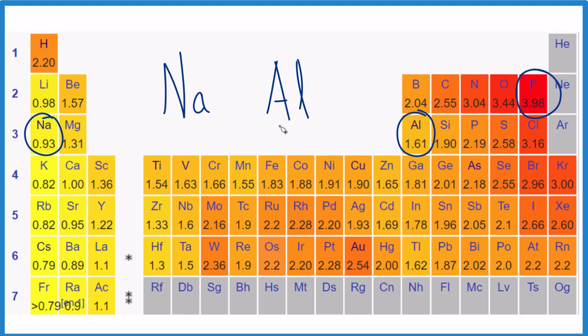So the trend for electronegativity, as you go across periods here, it increases. As you go up groups, it also increases, and fluorine here, that's the most electronegative.